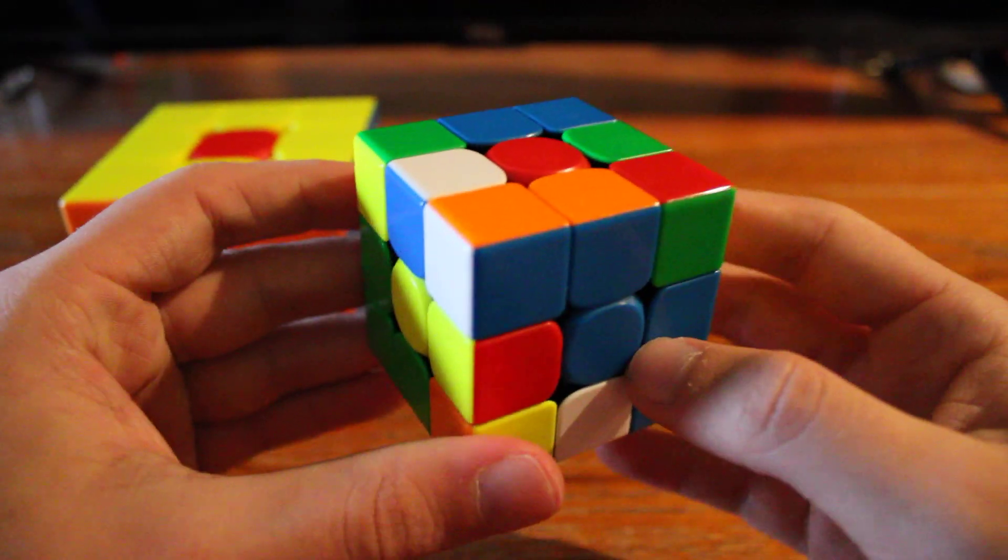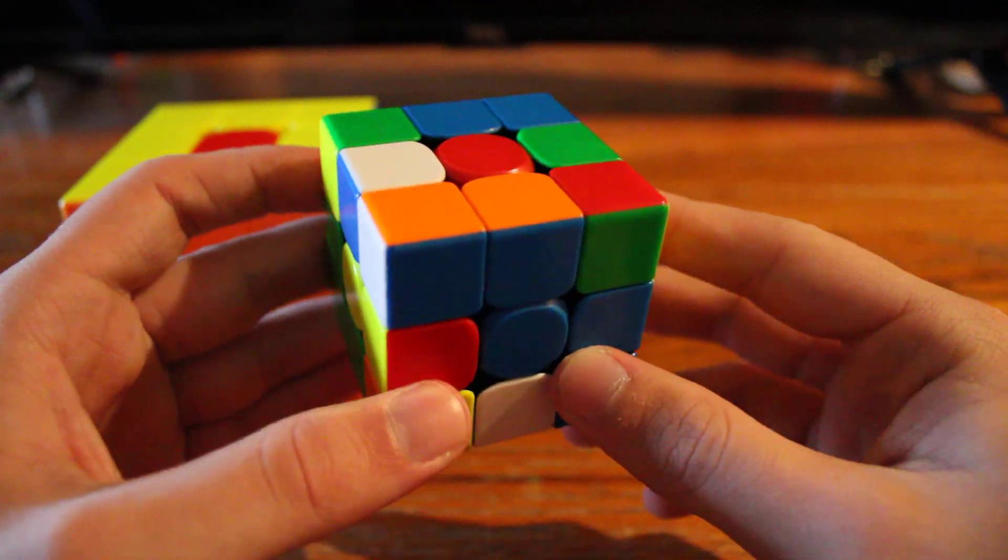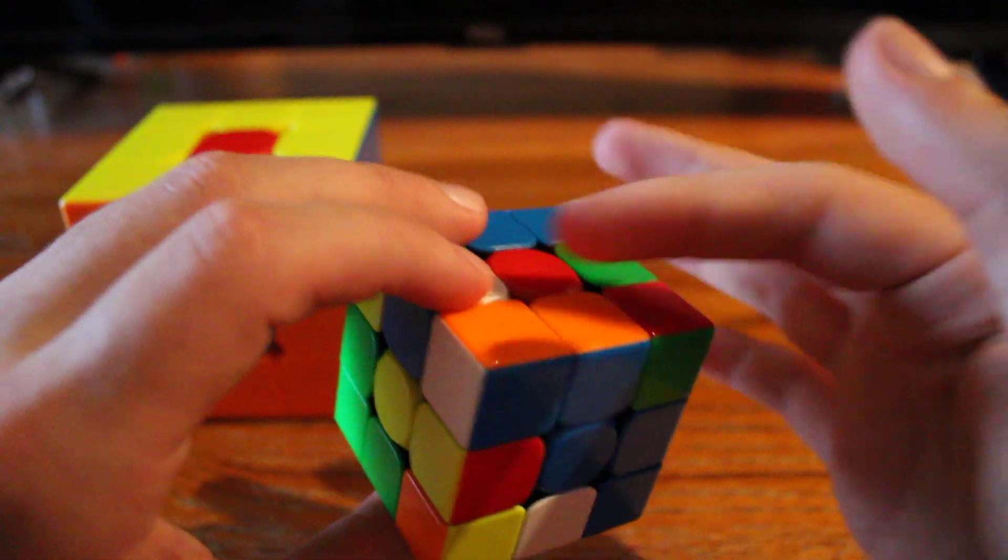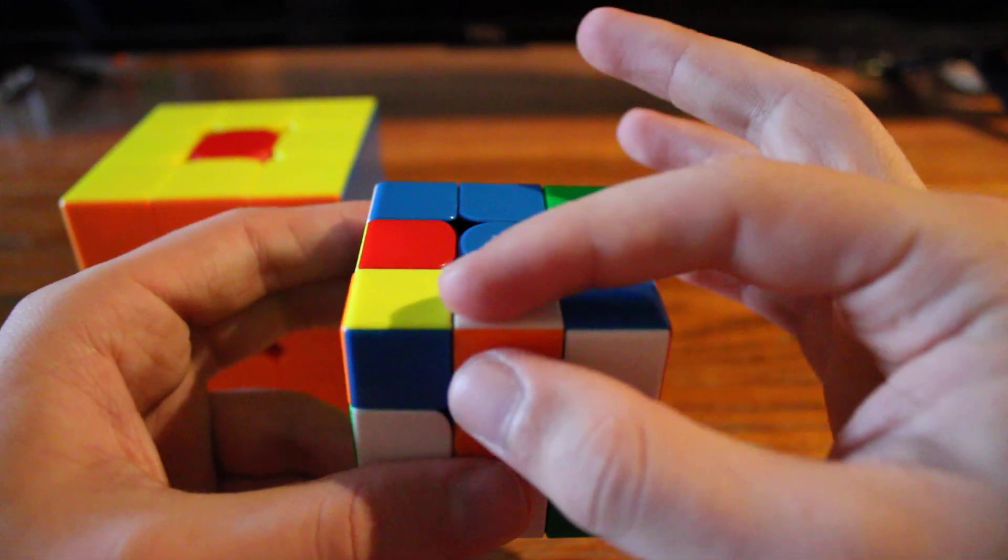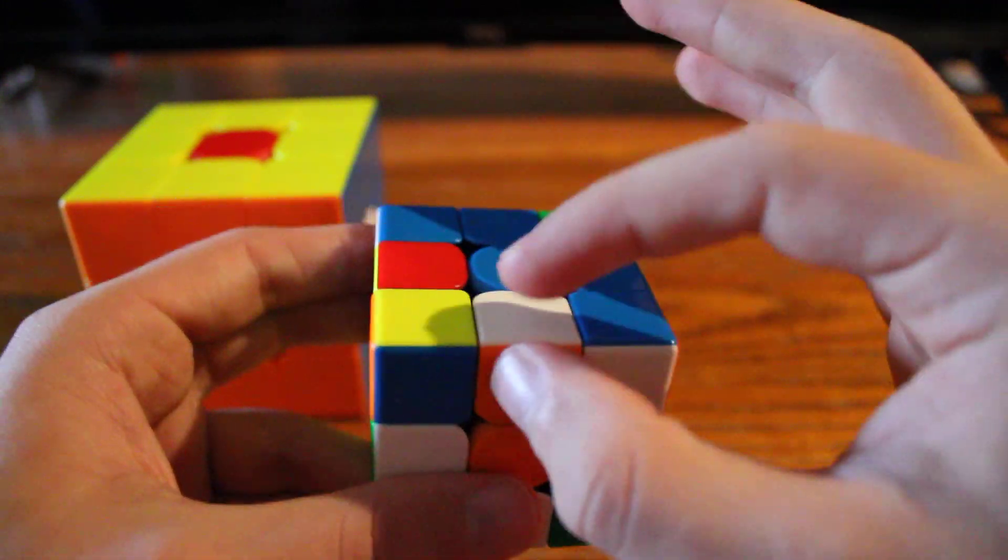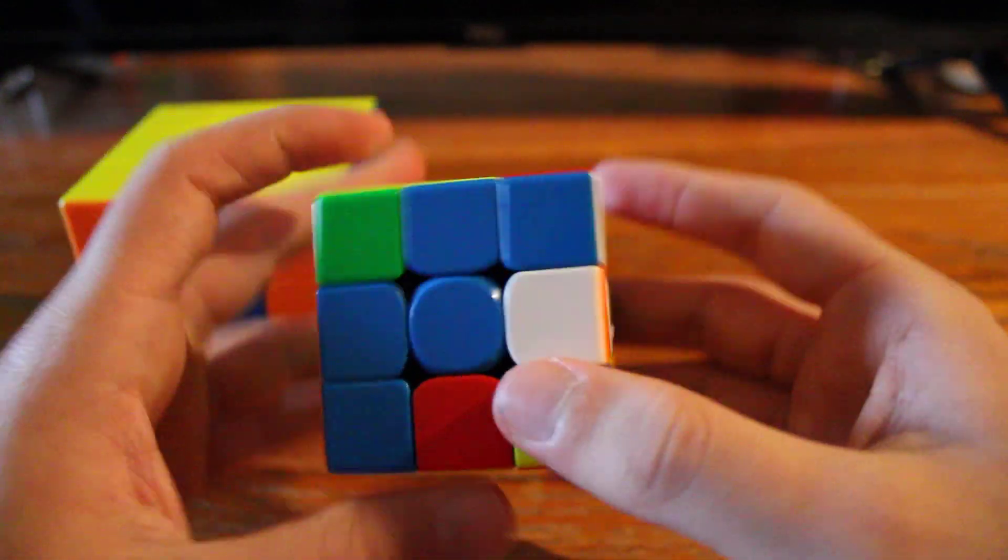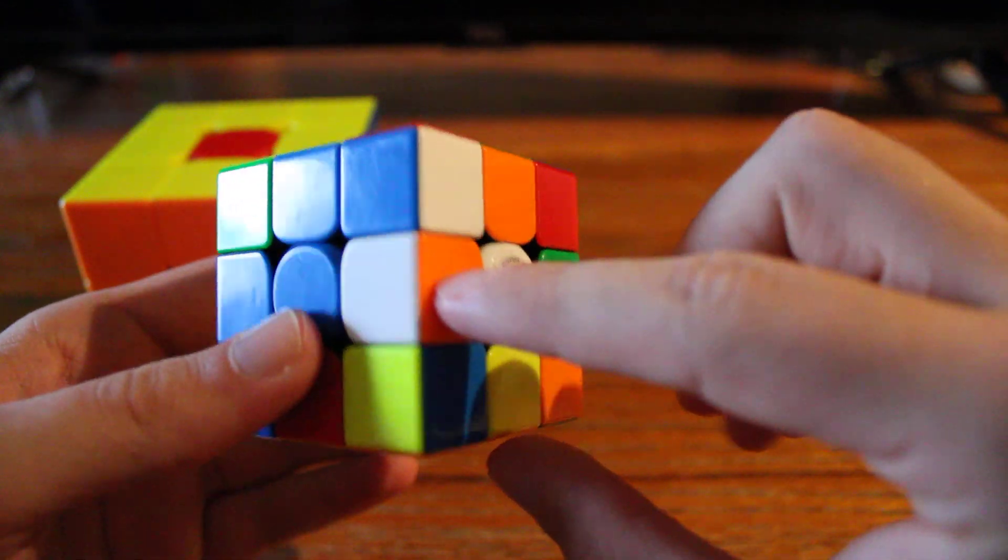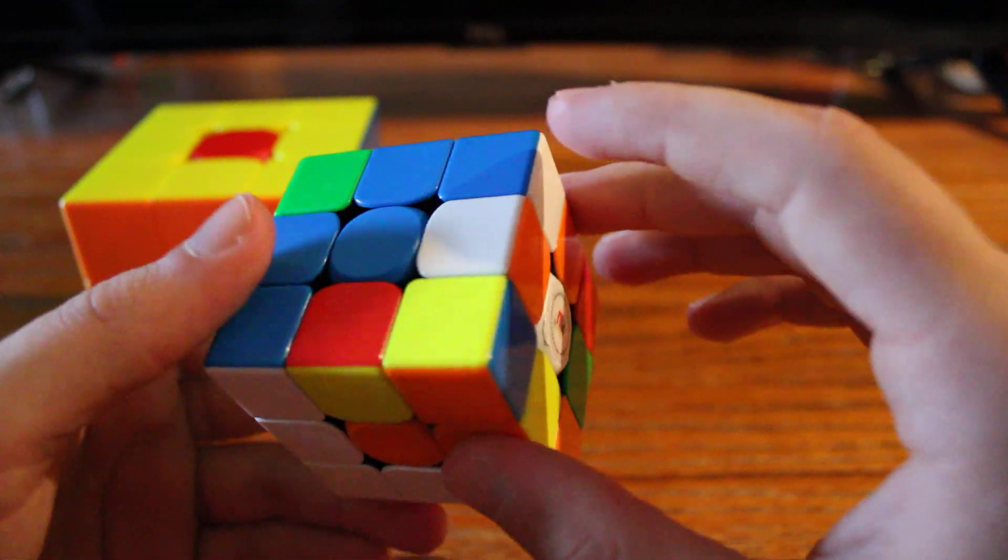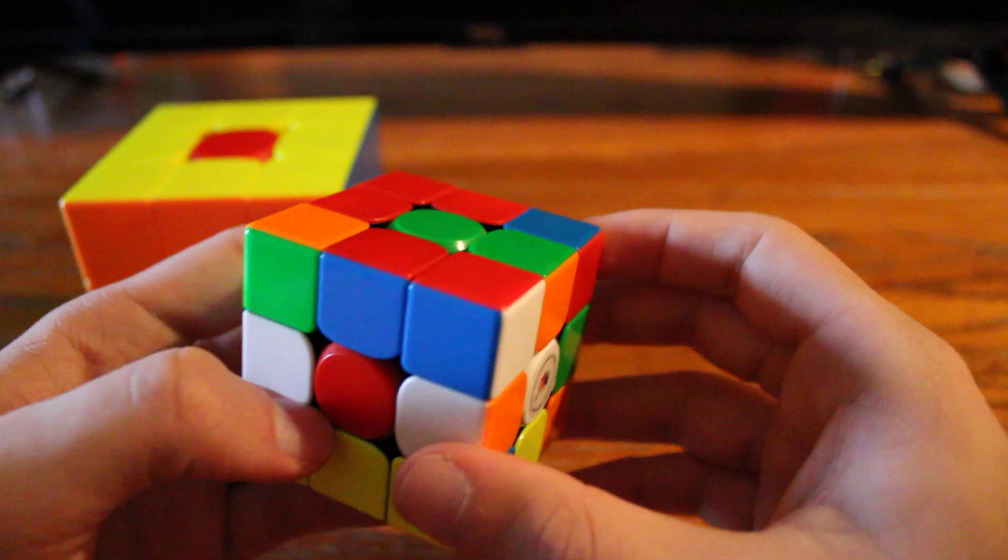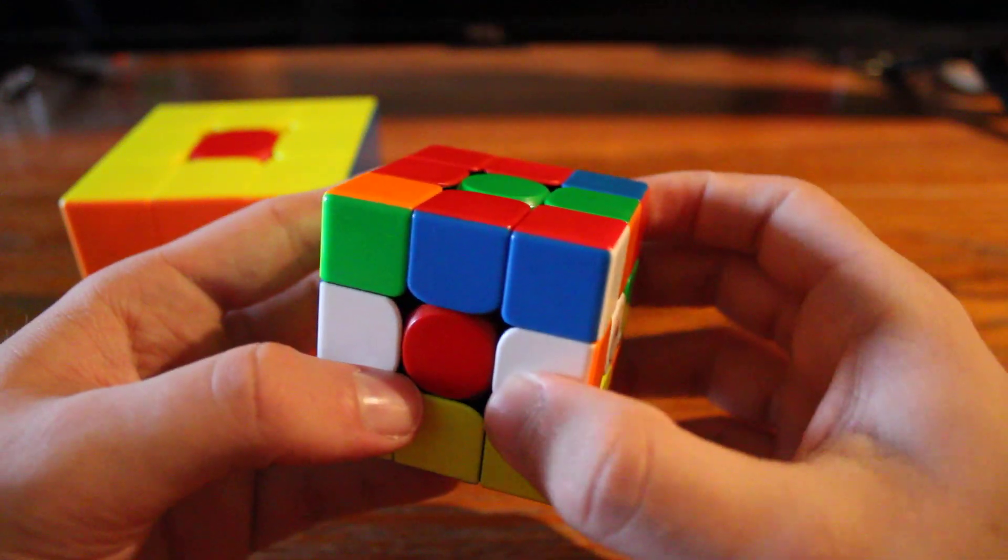So you can see right off the bat, I have this white-orange-blue-free pair. And so to hide that out of the U layer, to prevent it from getting messed up with any nonsense in the U layer, and to help orient this white-orange cross piece, which actually belongs here, but it's just flipped around, I do an F'. And then to get this orange-white cross piece into the top layer for placement down here, I do an R.